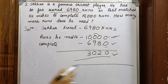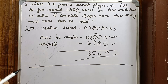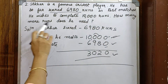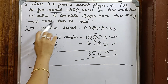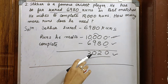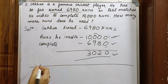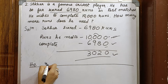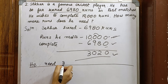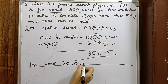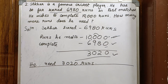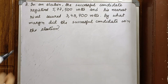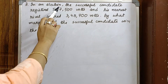He needs 3,020 more runs to complete 10,000. So the answer is he needs 3,020 runs. Let's move on to the next question.